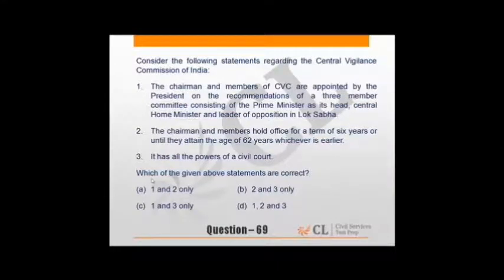Statements regarding Central Vigilance Commission of India. Chairman and members of CVC are appointed by President on recommendation of three-member committee consisting of Prime Minister as head, central home minister, and leader of opposition in Lok Sabha. Going further, chairman and members hold office for term of six years or until they attain age of 62 years, whichever is earlier. It's not 62 years, it is actually 65 years. So just second option goes wrong. As second goes wrong, it automatically gives us C as correct answer. It has all powers of civil court - again correct. And one was already correct.